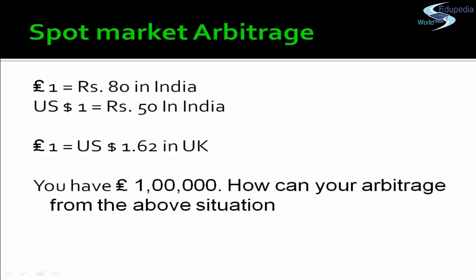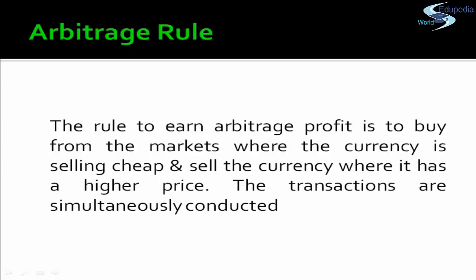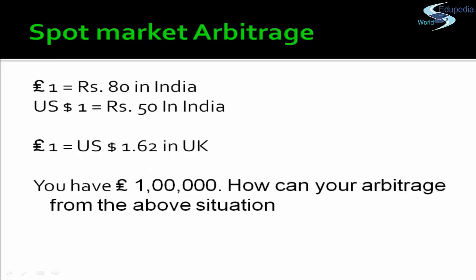For example: Pound 1 = ₹80 in India, USD 1 = ₹50, and Pound 1 = USD 1.62 in the UK. If you have one pound, the rule to earn arbitrage profit is to buy the currency from the market where it is cheap and sell it where it is at a higher price. Spot market transactions must occur simultaneously. Pound 1 in UK is USD 1.62, which equals ₹81 (1.62 × 50), but Pound 1 is only ₹80 in India — so the pound is cheaper in India, and arbitrage profit is possible.